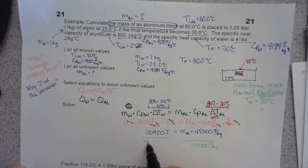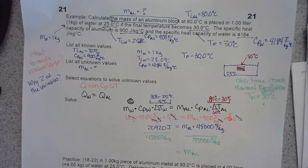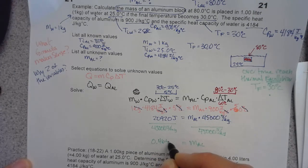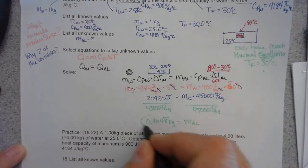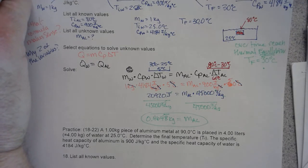Now it's just algebra. I need to isolate the mass of aluminum — it's being multiplied by 45,000 J/kg, so I divide both sides by 45,000. The joules cancel, leaving mass of aluminum equal to 20,920 divided by 45,000, which gives 0.4648 kilograms. There you go, ladies and gentlemen. If you have questions, hit me up in the chat — peace.